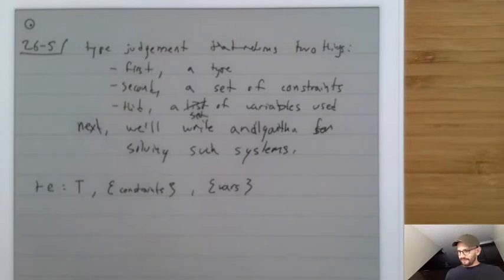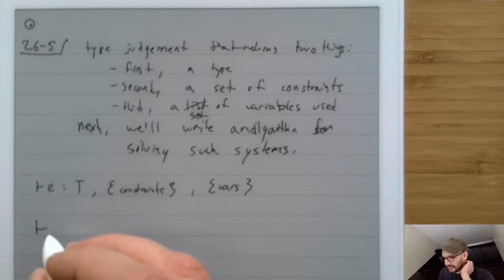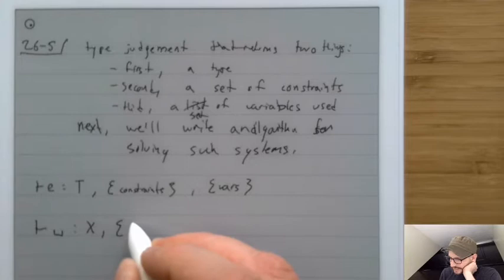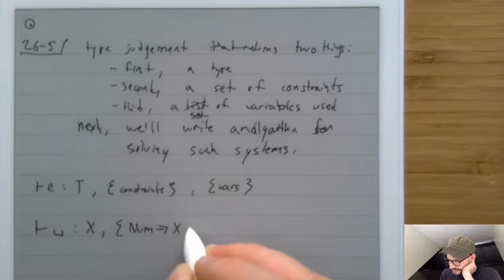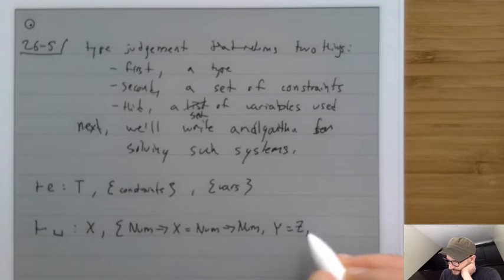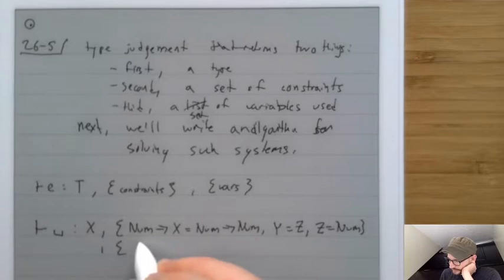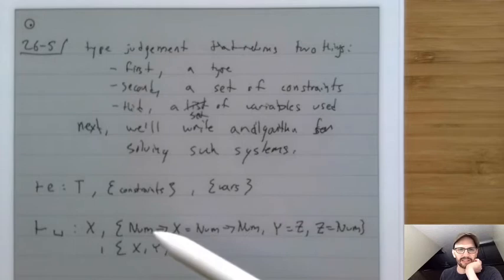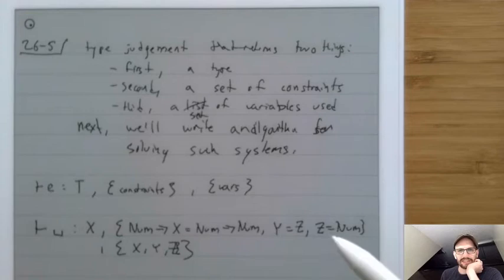As a little example: imagine a program whose type is x, with constraints saying number arrow x equals number arrow number, and y equals z, and z equals number. We take this set of constraints, solve it, and discover that x is supposed to be number.